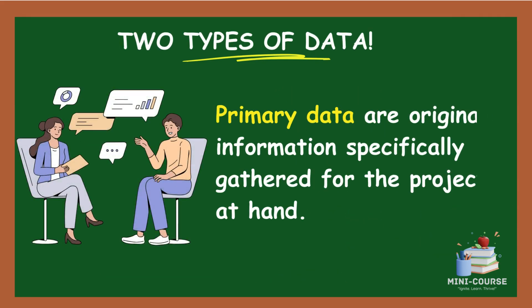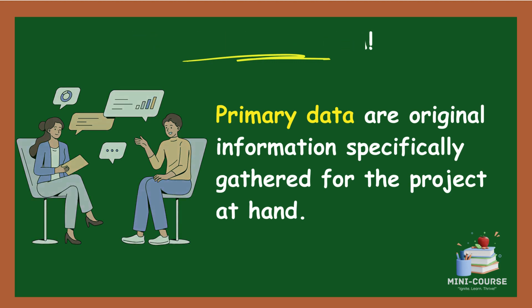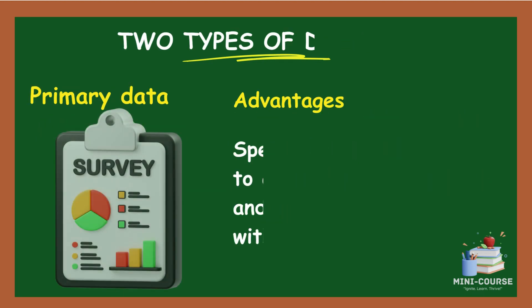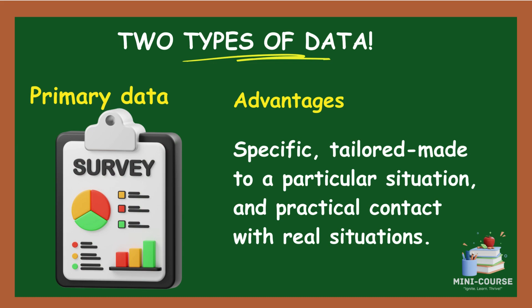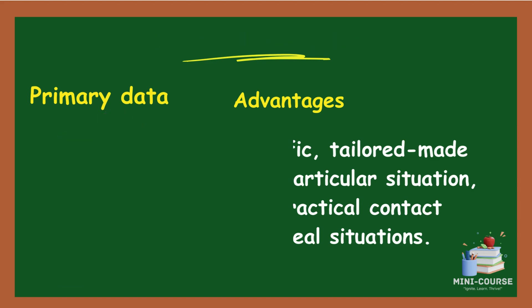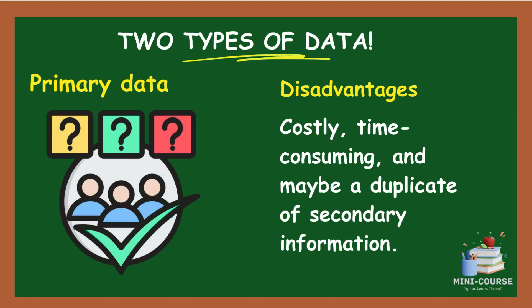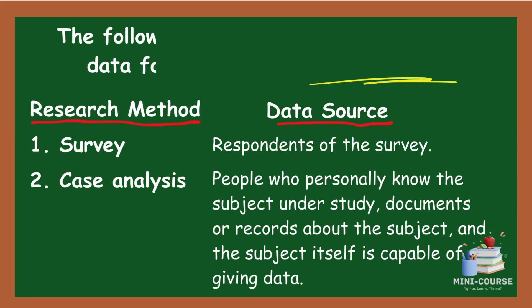Primary data are original information specifically gathered for the project at hand. They have the advantages of being specific, tailor-made to a particular situation, and practical contact with real situations. They also have the disadvantages of being costly, time-consuming, and may be a duplicate of secondary information.